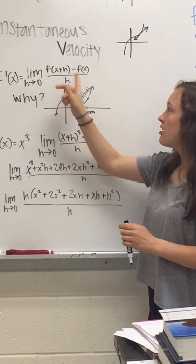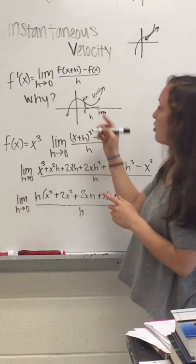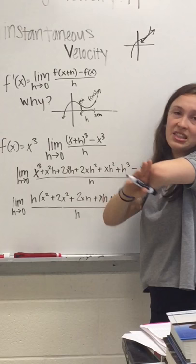So, as you can see, this now applies here because it's basically the slope formula, but as it approaches 0, this h value, the area between the two points gets smaller and smaller and smaller. So, the average velocity becomes the instantaneous velocity.